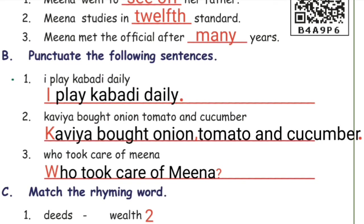Rewrite the following sentences using capital letters and punctuation. First: 'I play cricket daily.' — Start the sentence with a capital I and end with a full stop. Second: 'Kaviya bought onion, tomato and cucumber.' — Capital K at the beginning, commas between items, and a full stop at the end. Third: 'Who took care of me now?' — Capital letter at the beginning and a question mark at the end.